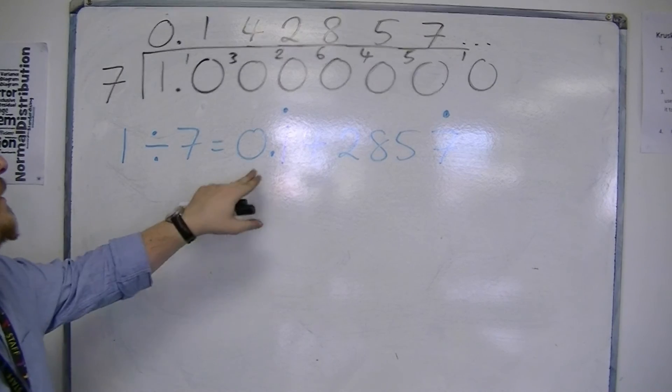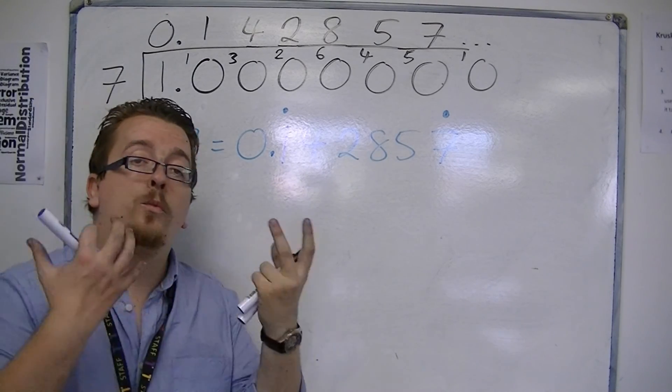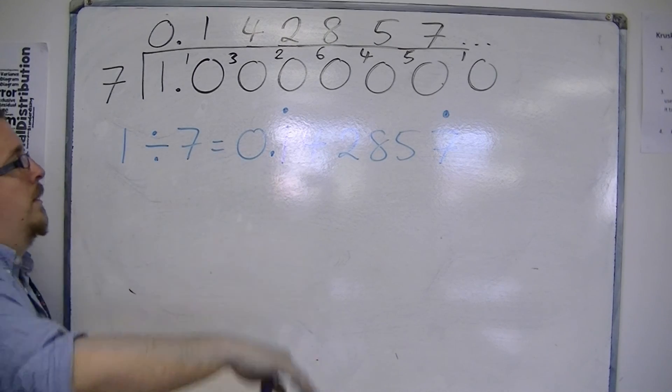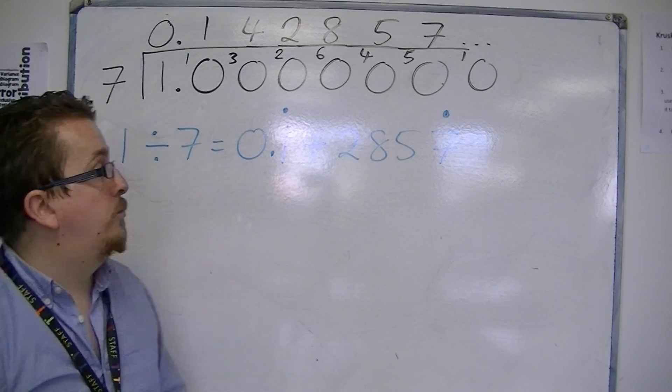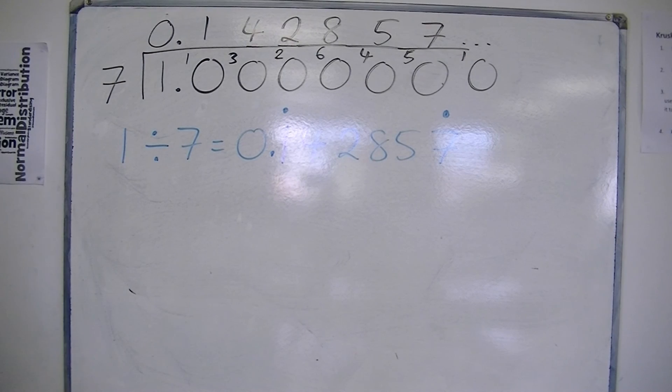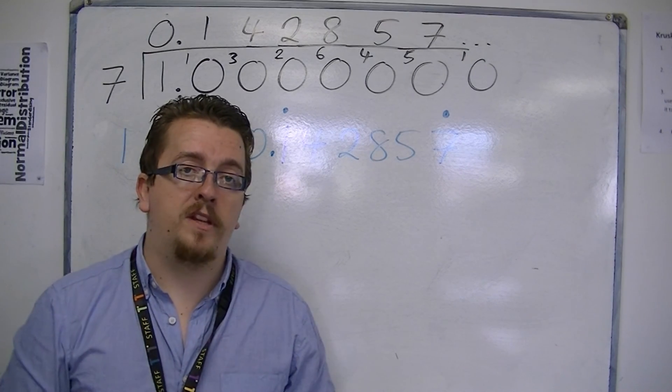1 divided by 7 is 0.142857, where the 142857 is what is recurring. So that's a nastier version. And it's probably, when I was working through, you were going, where the hell is this going? But that is how it works. And that is how we can identify terminating and recurring decimals.